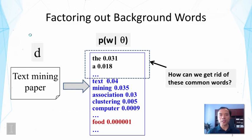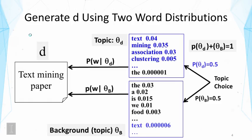This is a slide you have seen earlier, where we talked about how to get rid of the background words that appear on top of the estimated language model for one document. If you want to solve the problem, it's useful to think about why we end up having this problem. These words are very frequent in our data and we are using a maximum likelihood estimate, so the estimate obviously would have to assign high probabilities for these words in order to maximize the likelihood.